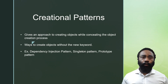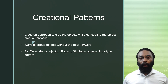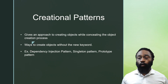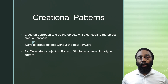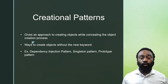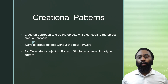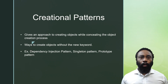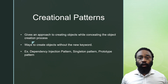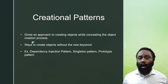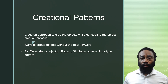Creational patterns give an approach to creating objects while hiding the way that the objects are instantiated. If you've been working with object-oriented programming, you realize you have to use the 'new' keyword to instantiate an object, but when you do that, you're hard-coding it. Some examples are the singleton pattern, prototype pattern, and dependency injection pattern. With creational patterns, you're looking to create an object and hide the way it's being instantiated.